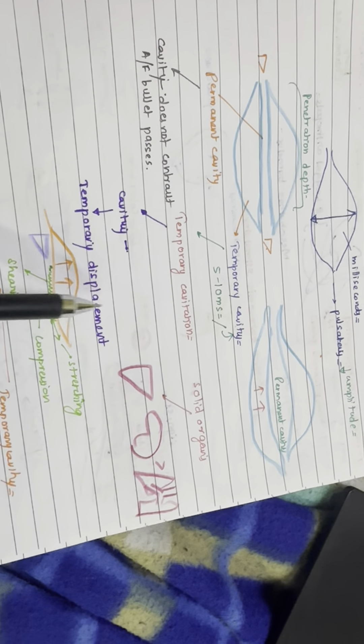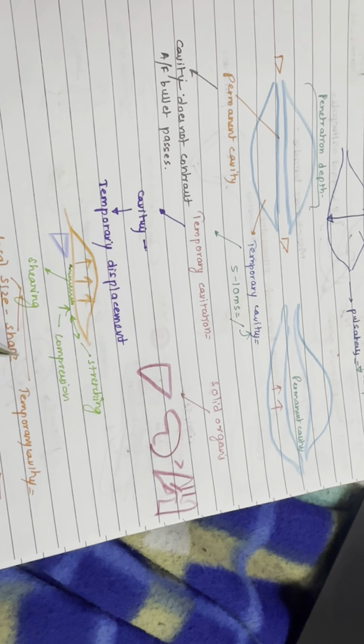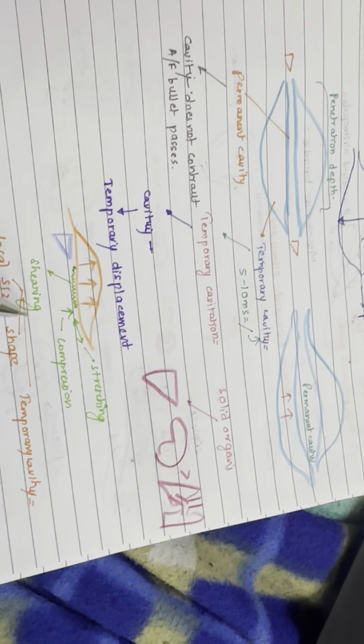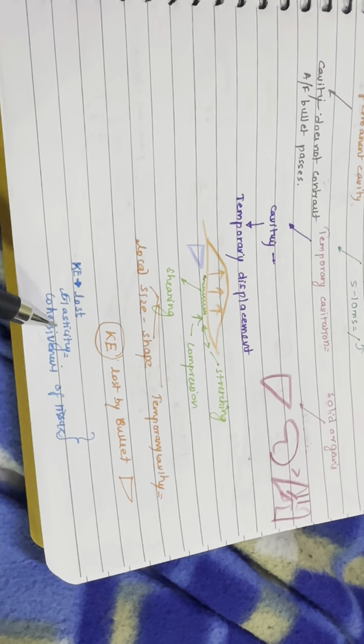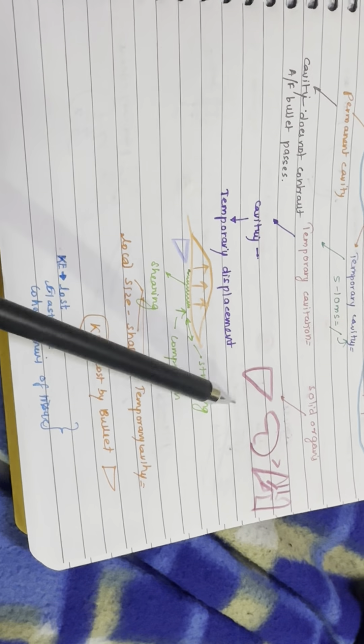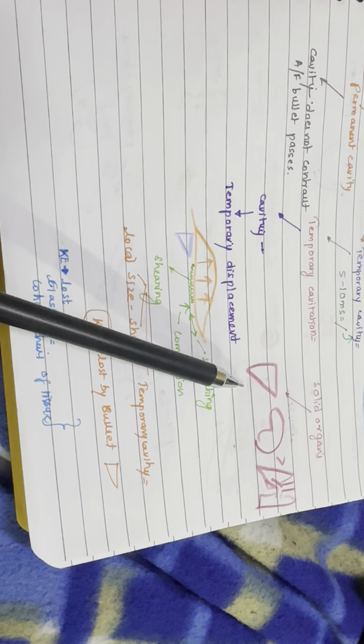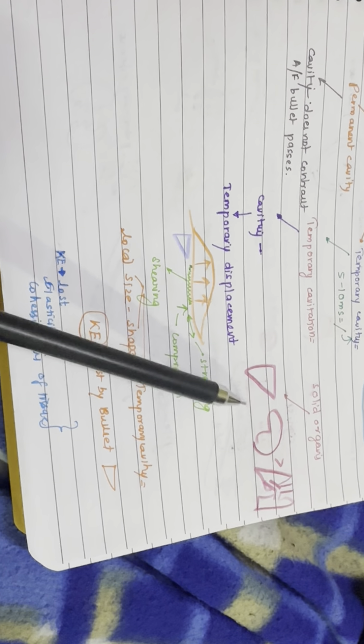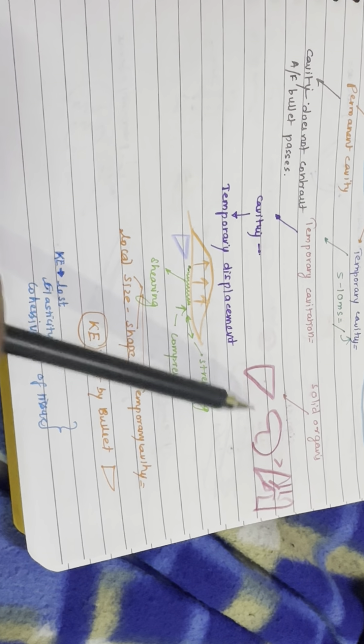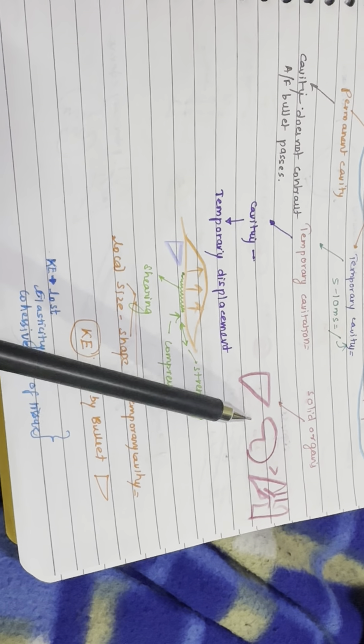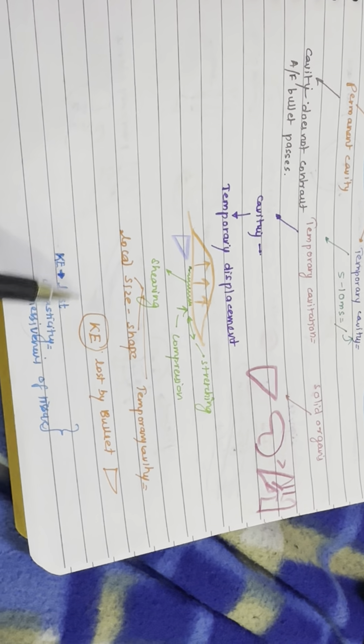The cavitation effect is more pronounced in solid organs, for example the liver and brain, and less pronounced in elastic tissue.